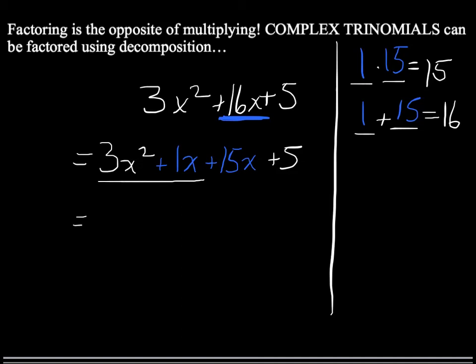3x² + 1x, the common factor is x, and in fact those two terms are x times (3x + 1). In the second pair of terms, 15x + 5, the common factor is 5, and so that is 5 times (3x + 1).